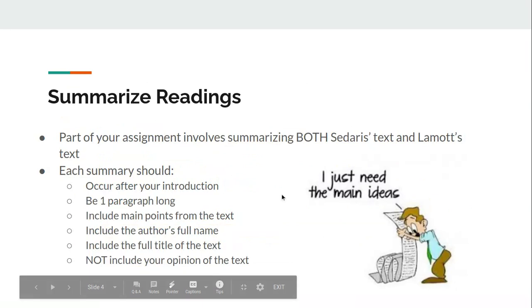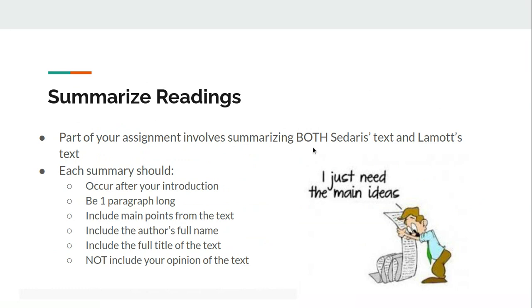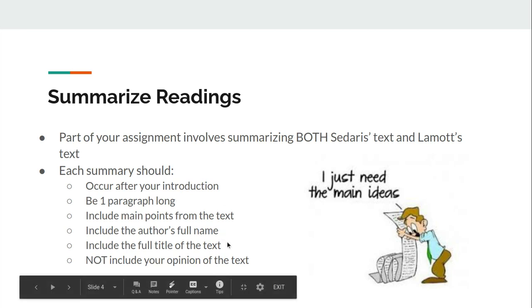The first part of the assignment is to summarize both the Sedaris text and the Lamont text. Remember that each summary should occur after your introduction. You'll have an introduction paragraph, then one-paragraph summaries of Sedaris and Lamont, or Lamont and then Sedaris — either way. Each one needs to be its own summary and it should be one paragraph long. Make sure that you're only including main points from the text, include the author's full name, include the full title of the text, and remember that with summaries we do not include opinions about the text.